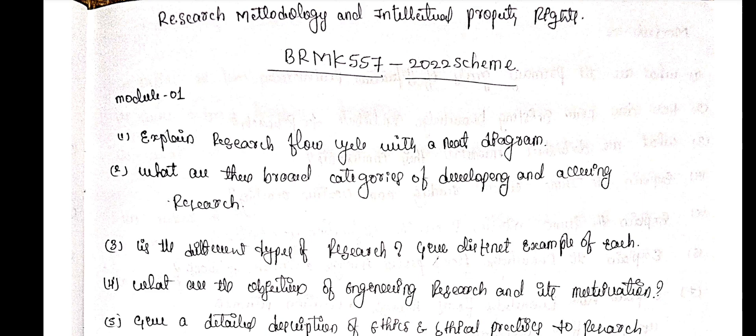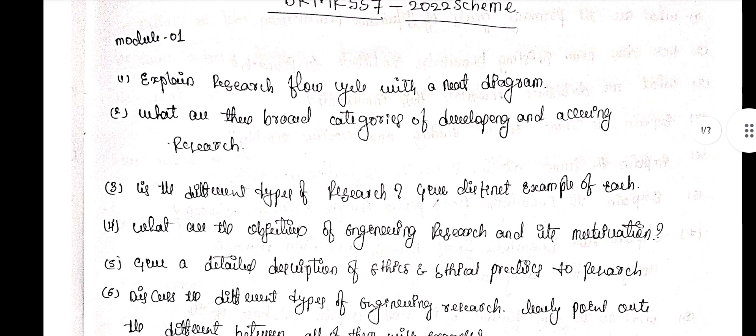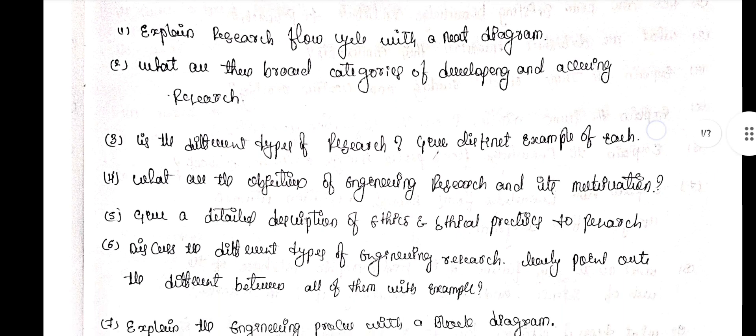First module: Question 1 — explain a research flow cycle with a neat diagram. Question 2 — what are the broad categories of developing and accessing a research? Question 3 — list the different types of research and give a distinct example of each. Question 4 — what are the objectives of engineering research and its motivation? Give a detailed description of ethics and ethical practice in research. Question 5 — discuss the different types of engineering research and clearly point out the difference between all of them with examples.